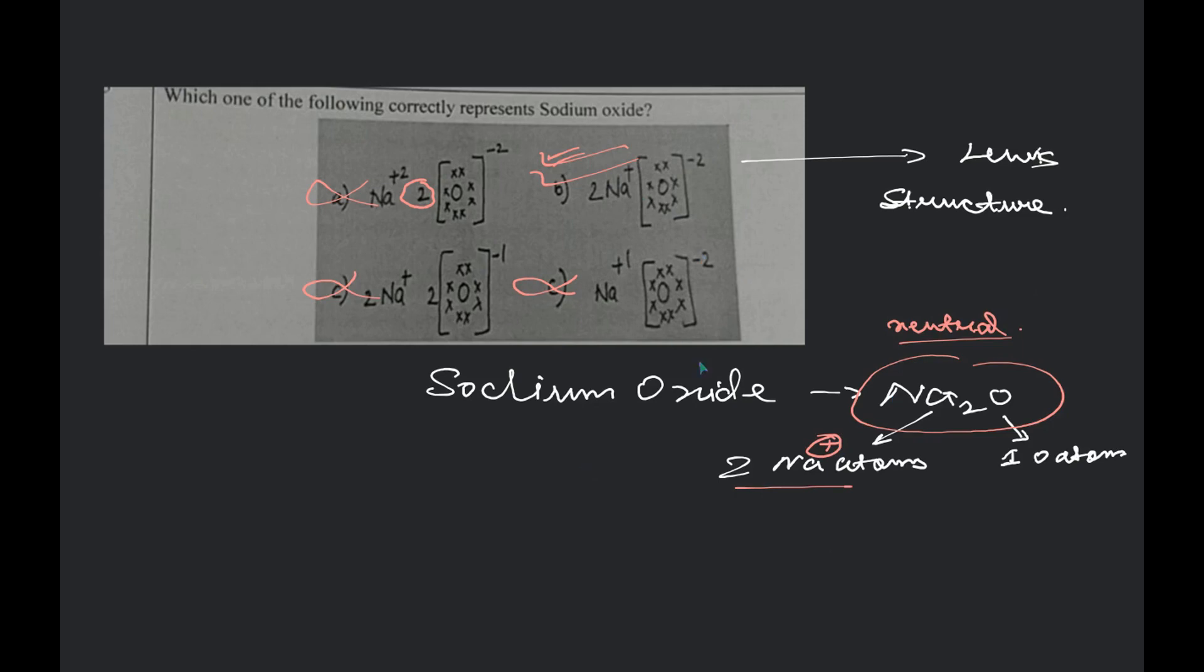So, in option B, you can say two sodium, that means, two positive charge is there. Two positive charge and what is the charge of oxygen? Oxygen is negatively charged. That means, if one oxygen is there, two negative charge, that means, it will compensate. So according to charge balance also, you can say that B is the correct option. Did you understand?